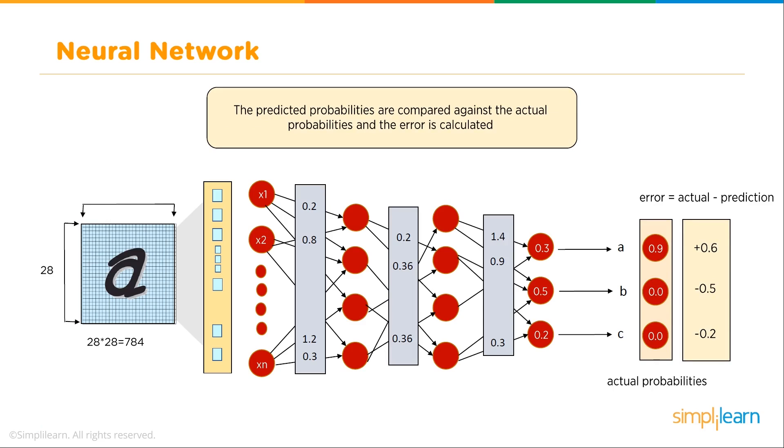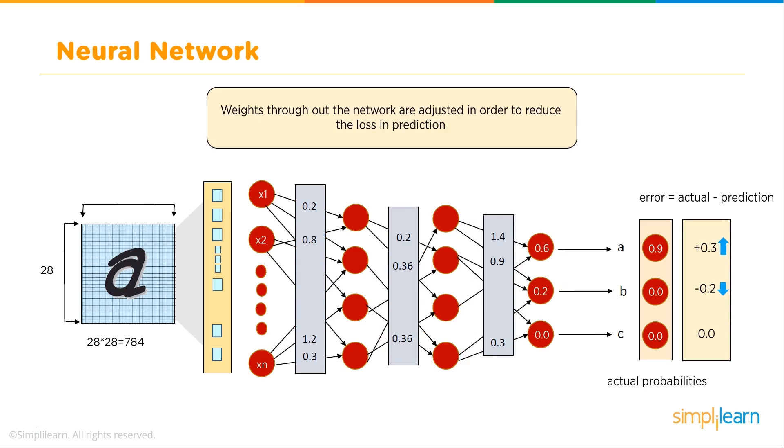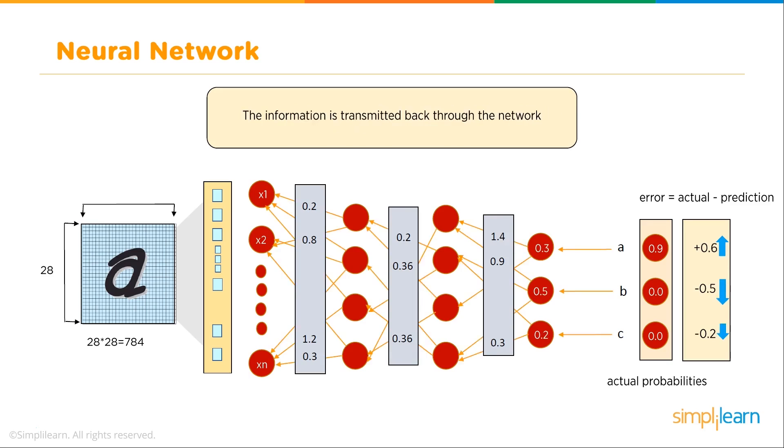The error is simply the actual minus predicted. We know it's not C, so it's minus 0.2. We know it's not B, so it's minus 0.5. But we do know that it is an A, so we adjust that by 0.6. The magnitude indicates the amount of change, while the sign indicates an increase or decrease in the weights. The information is transmitted back through the network. Here comes our back propagation.